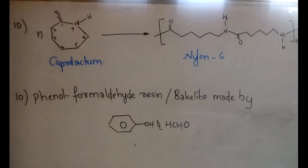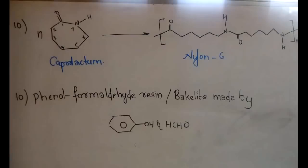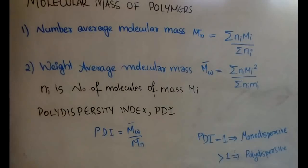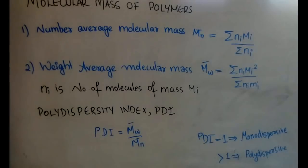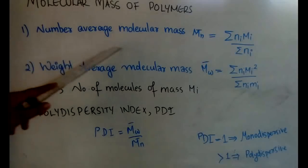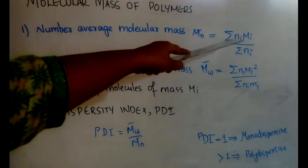There are many polymers with different properties, but the ones most commonly asked have been covered. Now for the mathematical part of polymers: the number average molecular mass, weight average molecular mass, and polydispersity index. Since a polymer consists of a large number of molecules, it is impossible to find the mass of each individually, so we use average molecular mass to express the mass of polymers.